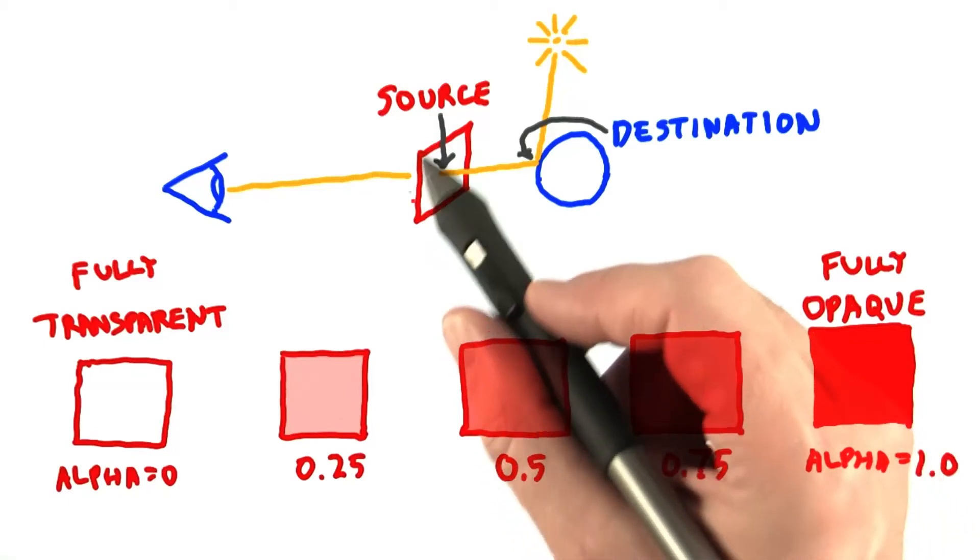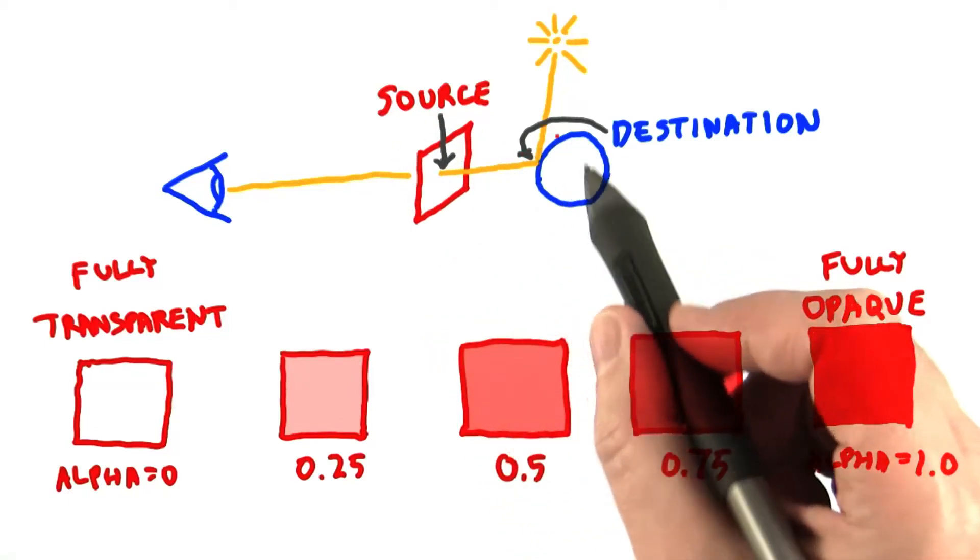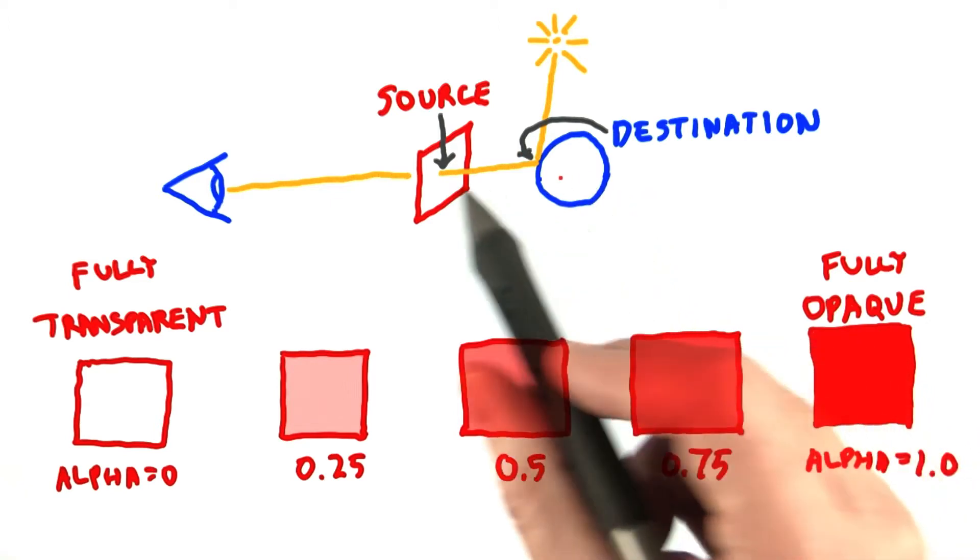What would be more general is to have the transparent filter's color affect the color behind it. In other words, we want to blend the two colors.